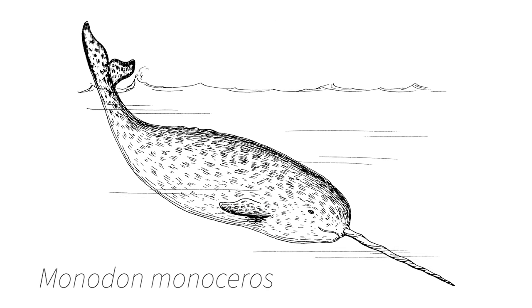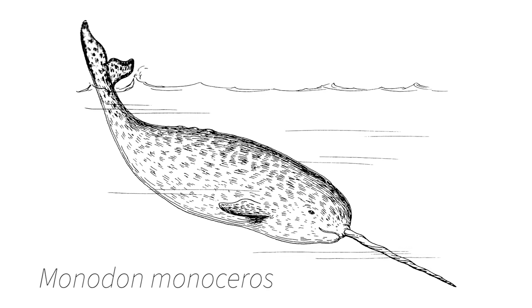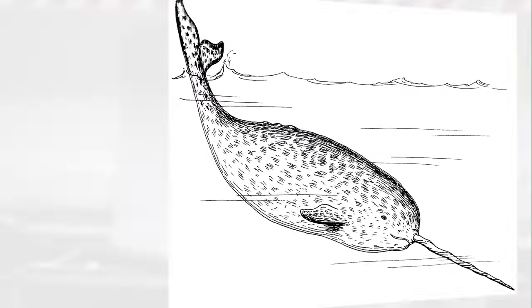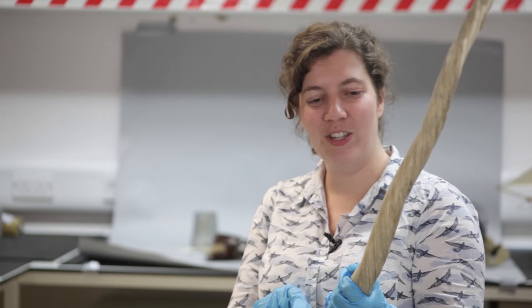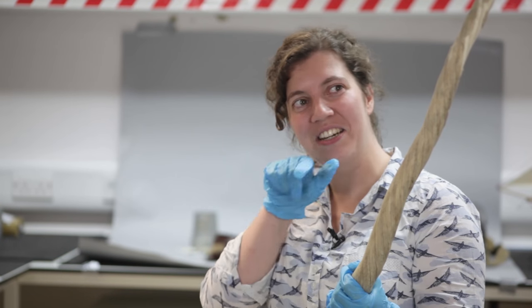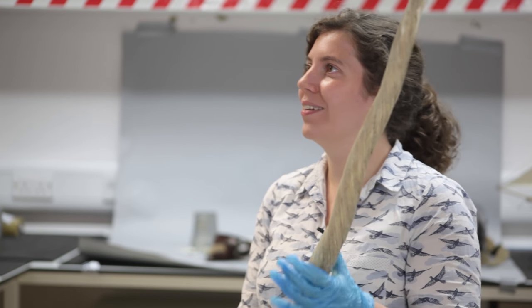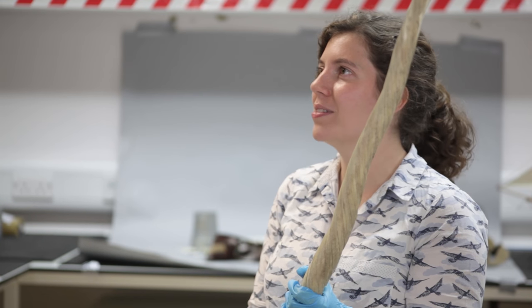The narwhal's part of the whale family, so it's quite closely related to beluga whales. And this is actually a tooth — one of its incisor teeth that over the years just got a bit out of hand. It was used for showing off, largely. Their main diet is actually cod and halibut, so clearly it's not designed for capturing prey.